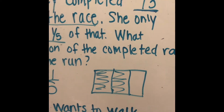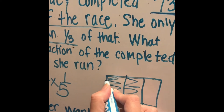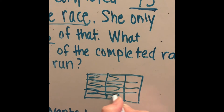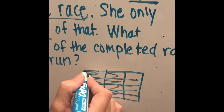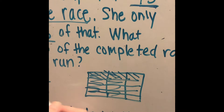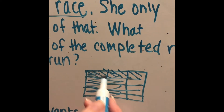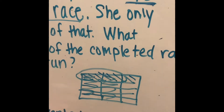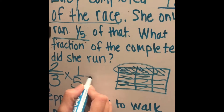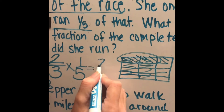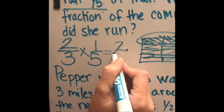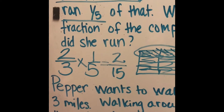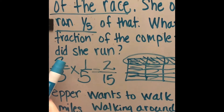She completed two-thirds of the race and ran one-fifth of that. I can divide it into fifths — one portion with crisscross lines represents the part she ran. When we multiply fractions, we multiply the numerators — that gives me 2 — then multiply the denominators — that gives me 15. So two out of fifteen are shaded.